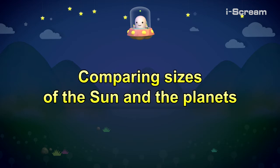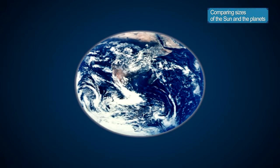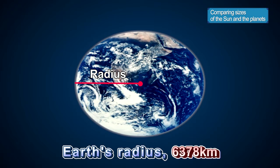Comparing sizes of the Sun and the planets. Our Earth's radius is 6,378 kilometers. It's difficult to imagine how big this is.